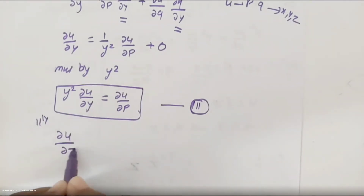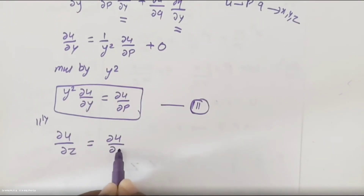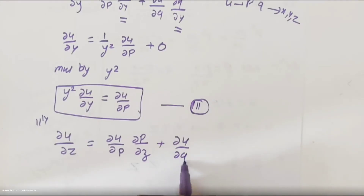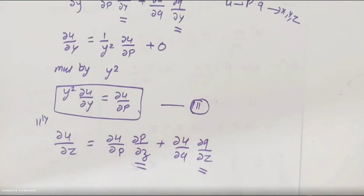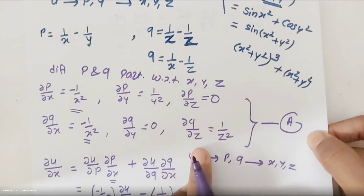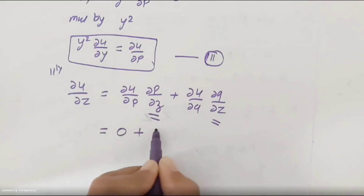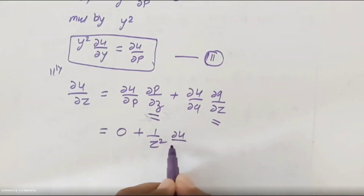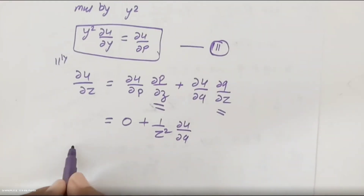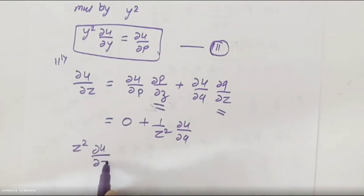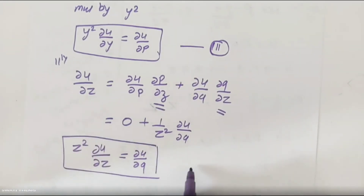Now we find the partial derivative of u with respect to z using the chain rule: ∂u/∂z = (∂u/∂p)(∂p/∂z) + (∂u/∂q)(∂q/∂z). Here ∂p/∂z = 0 and ∂q/∂z = 1/z². So the first term is zero. Multiplying through by z², we get: z²(∂u/∂z) = ∂u/∂q. This is Equation 3.